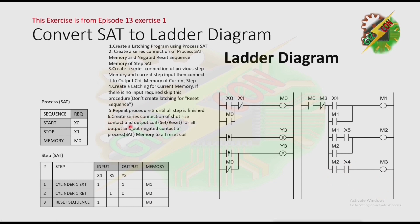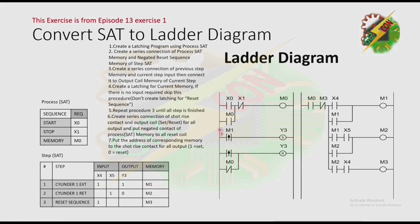Next, create a series connection of strut rise contact and output coil set/reset for all outputs, and put a negated contact of process SAC memory to all reset coils. We put negated m0 here. Then put the address of the corresponding memory to the strut rise contact for all outputs — 1 is for set and 0 is for reset. We have 1 here, so we put m1 to set. We put m2 on the reset because the value here is 0. Our program is now complete.